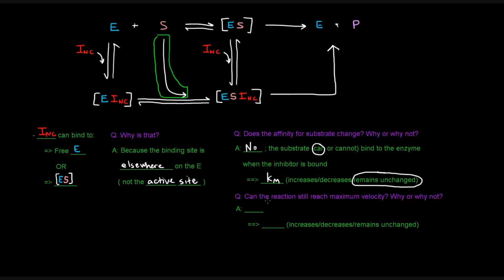Now the question is: can the reaction still reach the maximum velocity? The answer is no. What's happening is that the Vmax actually cannot be reached — the Vmax ends up decreasing. Why? The enzyme and substrate are supposed to come together to make the enzyme-substrate complex, which can proceed towards free enzyme and product. If you add this non-competitive inhibitor, it can take free enzyme away to make the enzyme-inhibitor complex, or it could take the enzyme-substrate complex and turn it into the enzyme-substrate-inhibitor complex, which cannot proceed towards enzyme and product.